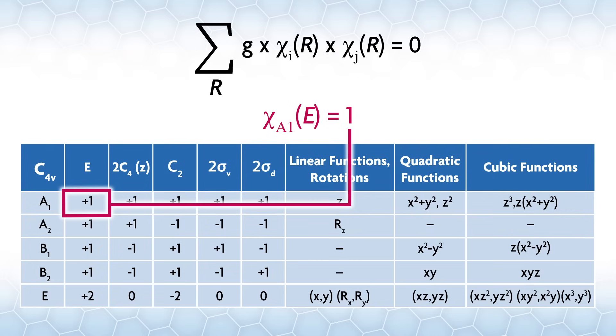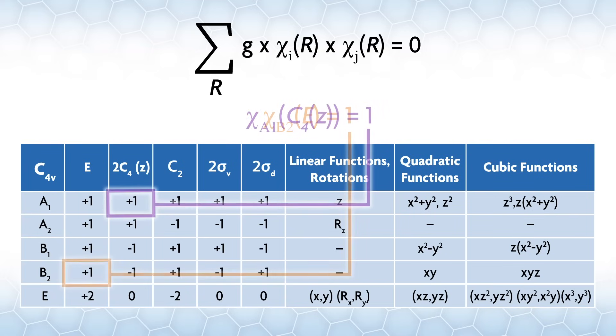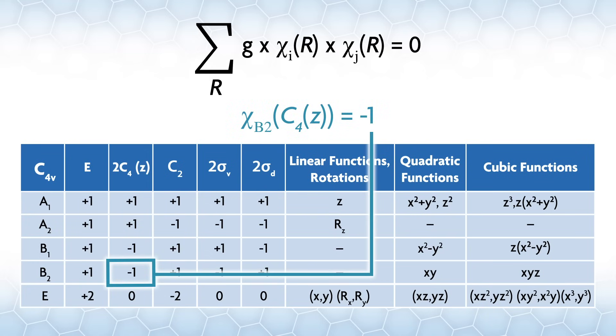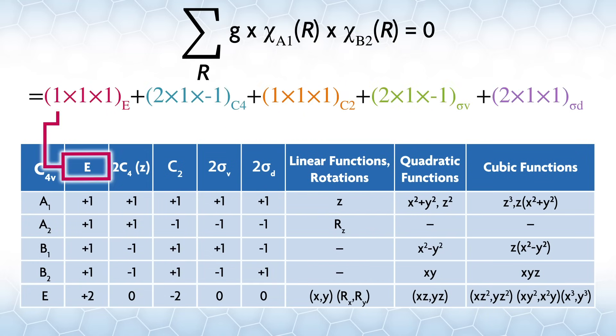Let's assume we're going to show that A1 and B2 are orthogonal. Chi_A1(E) equals 1 and chi_B2(E) equals 1. Under C4z, the character for A1 is 1 and it's negative 1 for B2. Here's the full equation where i equals A1 and j equals B2.